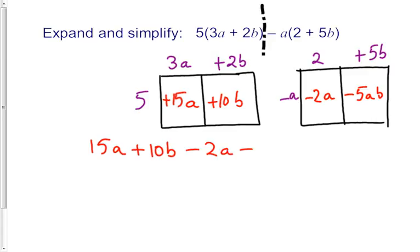Now you need to collect your like terms. You can see 15a take away 2a is 13a.